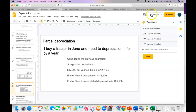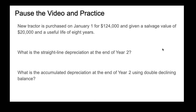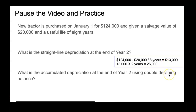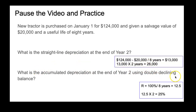Here's a practice example: a new tractor purchased January 1st for $124,000, salvage value of $20,000, and a useful life of 8 years. Calculate straight line and double declining balance depreciation at the end of year two. For straight line: cost minus salvage divided by years is ($124,000 minus $20,000) divided by 8 equals $13,000 per year. Accumulated depreciation at end of year two is $26,000.